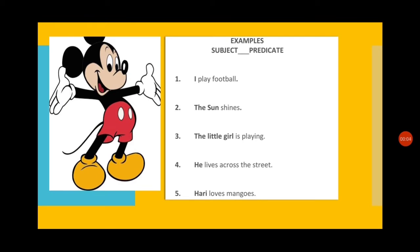Now let us try to understand the concept of subject and predicate with the help of a few examples. I am going to read out all five sentences and then we will discuss which part is the subject and which part is the predicate. Sentence one: I play football. Two: The sun shines. Three: The little girl is playing. Four: He lives across the street. Five: Hari loves mangoes.